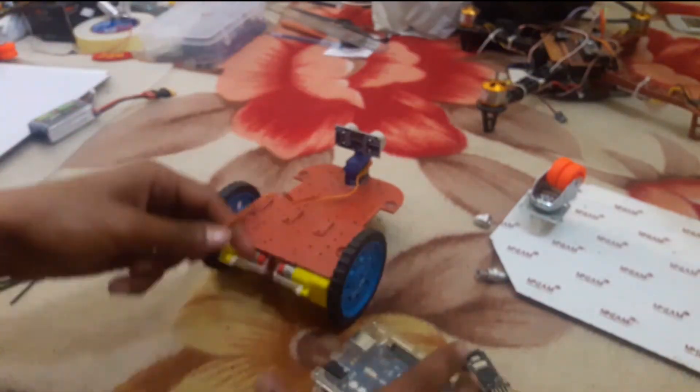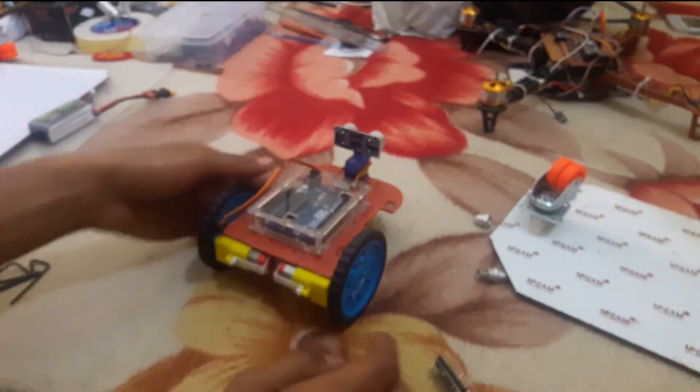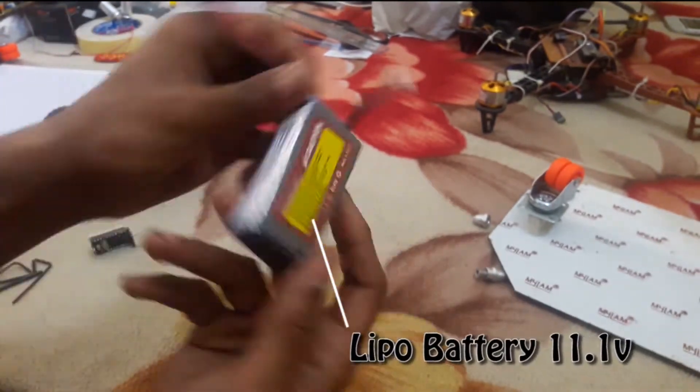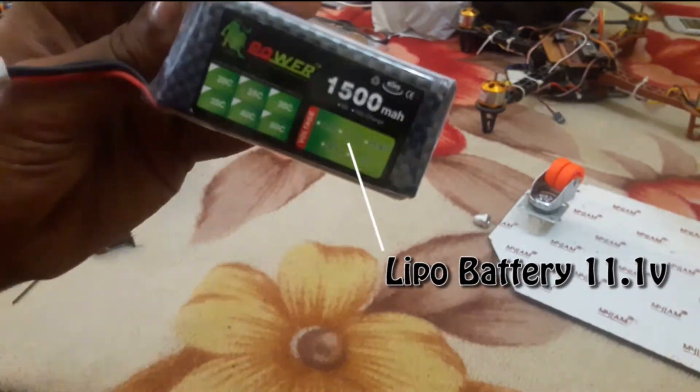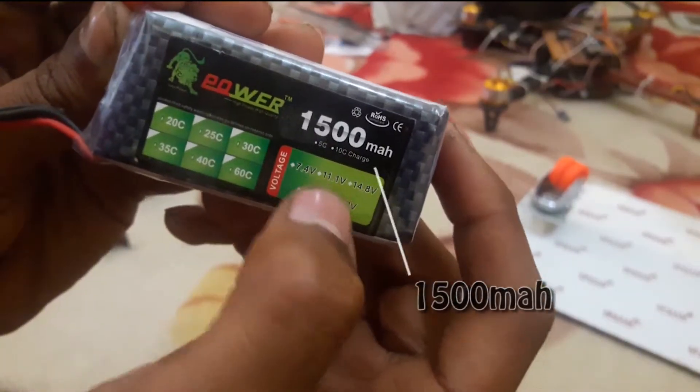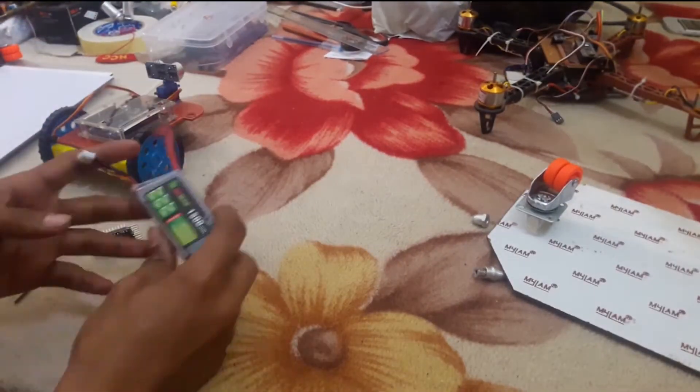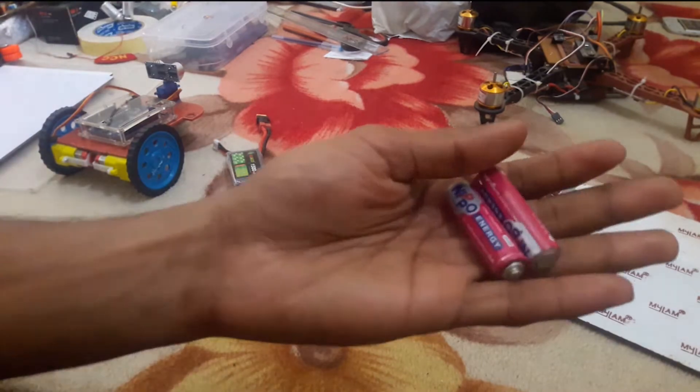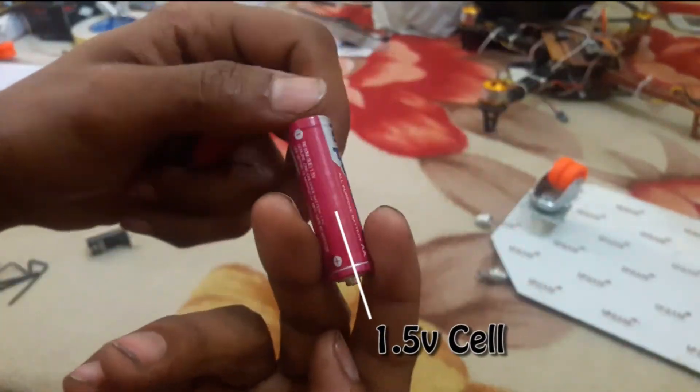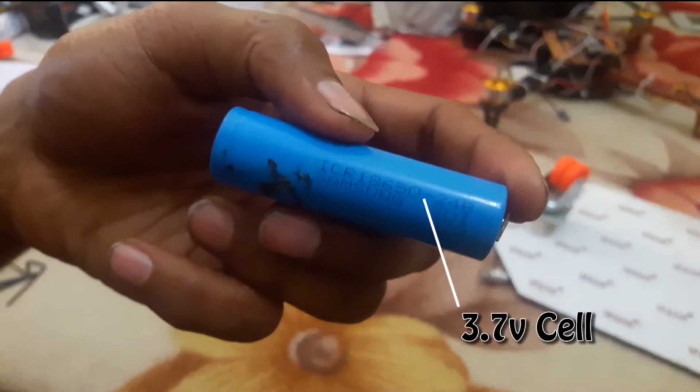For battery, you can use any type of battery. This is 11.1 volt 1500 mAh LiPo. You can use 1.5 volt cells too if you want, and you can use 3.7 volt cells extracted from old laptop batteries.